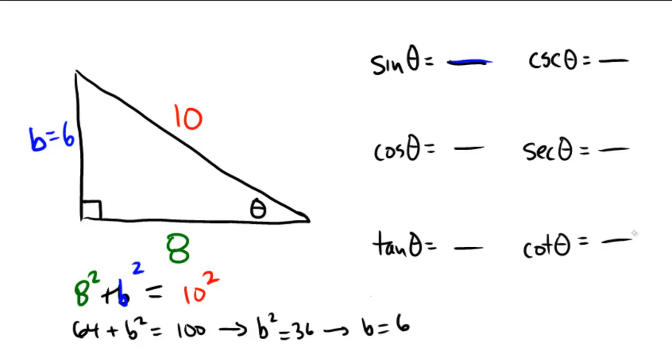So sine is opposite over hypotenuse. So from the angle here, the opposite over hypotenuse would be 6 over 10, which reduces to 3 over 5. So I'm going to call this one a 3 over 5 ratio, 3 over 5.